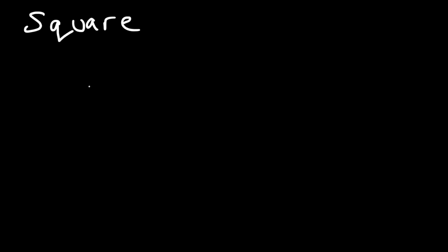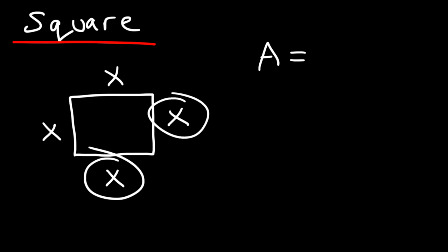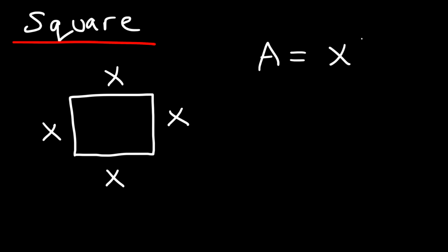The next 2D figure is the square. In a square, all four sides are the same — if you call one side x, every other side also has length x. For a rectangle the area is length times width, but for a square it's x times x, or simply x squared.